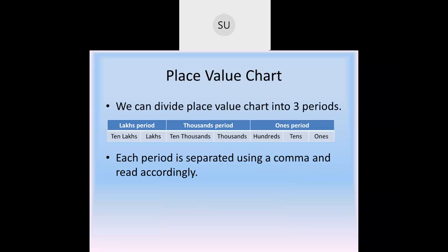Place value charts are normally divided into 3 periods. We have the ones period, which contains place values ones, tens and hundreds. Then the thousands period, which contains thousands, ten-thousands and hundred-thousands. And then the lakhs period. Each period is separated using a comma when writing numbers — between the lakhs period and thousands period there will be a comma, and between thousands and ones periods there will be a comma.